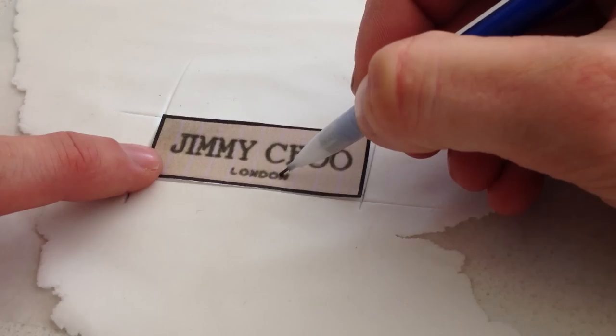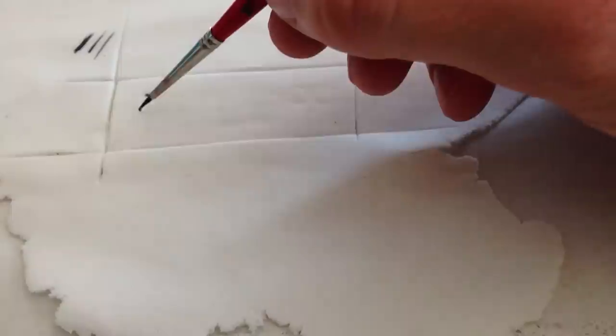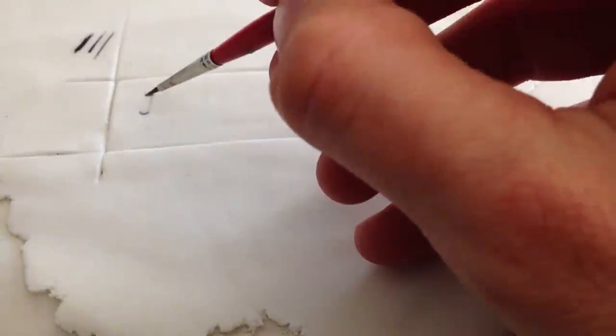When you remove the paper you will be able to see a light indent that will guide you where to put the letters. Now you can either paint them on using black gel food color or you can use an edible marker to write them on.